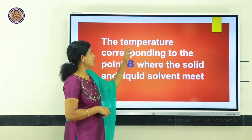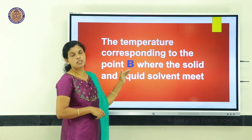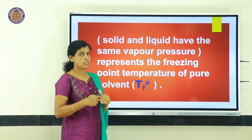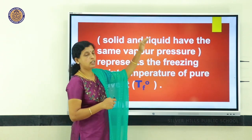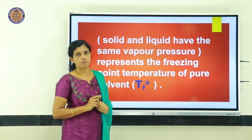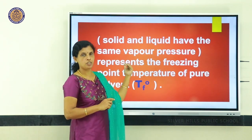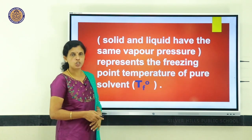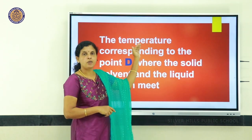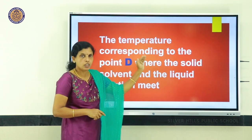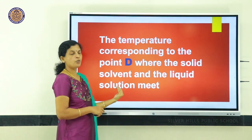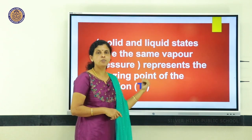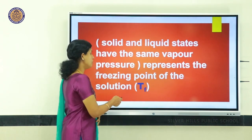The temperature corresponding to point B, where both the solid and liquid have the same vapor pressure, is the freezing point of pure solvent, Tf⁰. The temperature corresponding to point D, where the solution and the frozen solvent meet, represents the freezing point of solution, denoted by Tf.